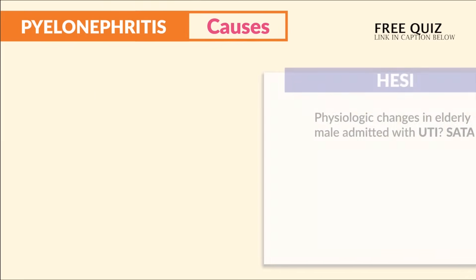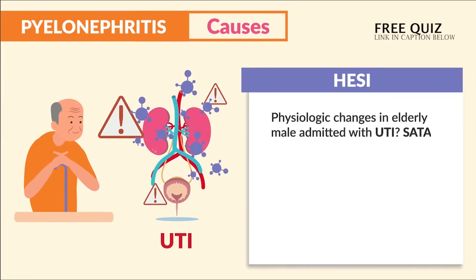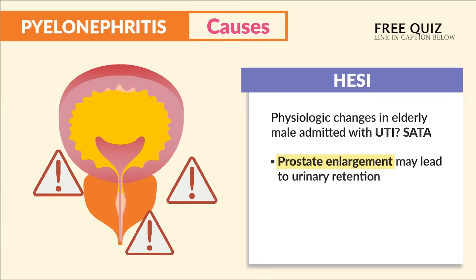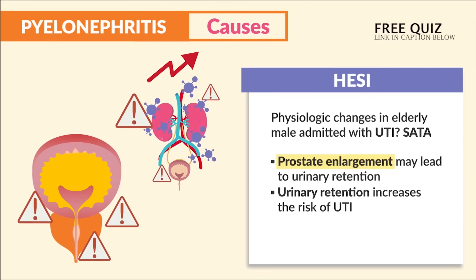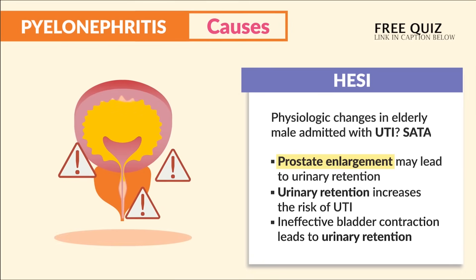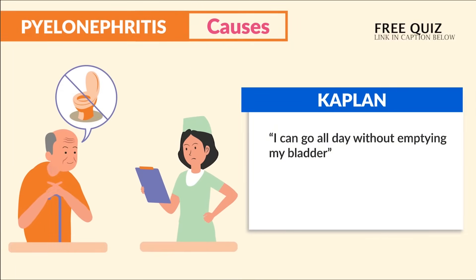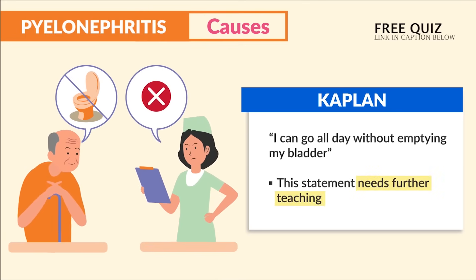This is typical for female anatomy, where the urethra is shorter and closer to the anus. Wiping back to front scrapes E. coli into the urethra, which is also common in children learning hygiene. A Hesse question about elderly men with a UTI asked to select all that apply: prostate enlargement leads to urinary retention, retention increases UTI risk, and ineffective bladder contraction leads to retention.